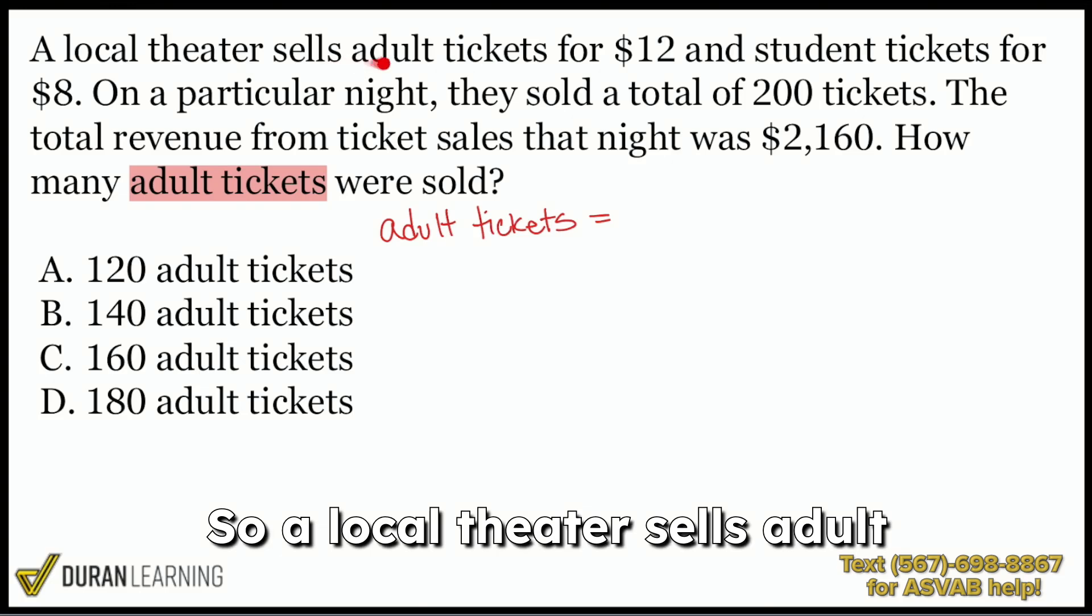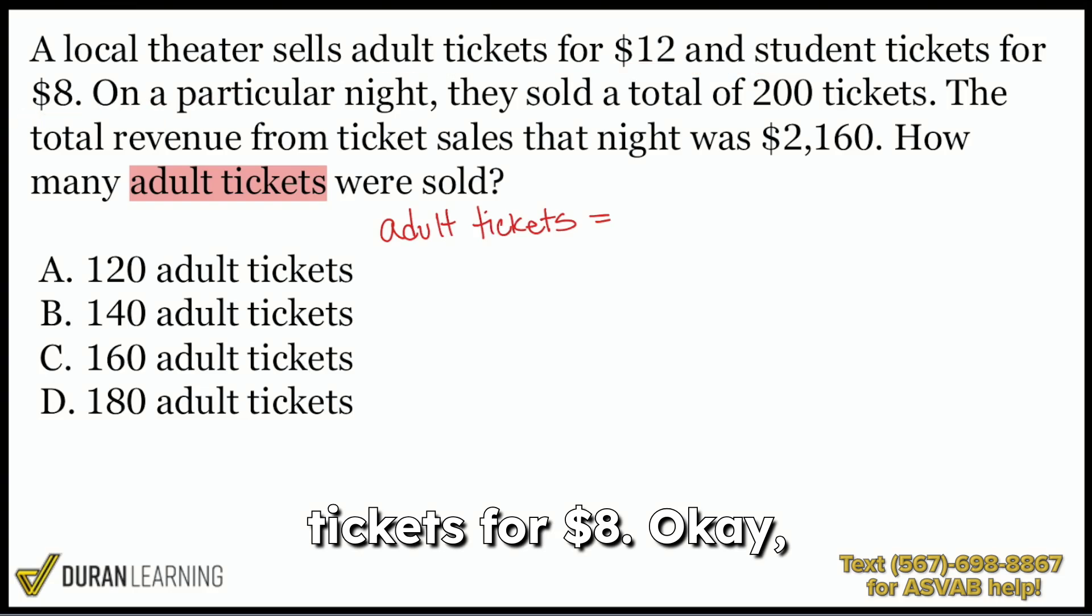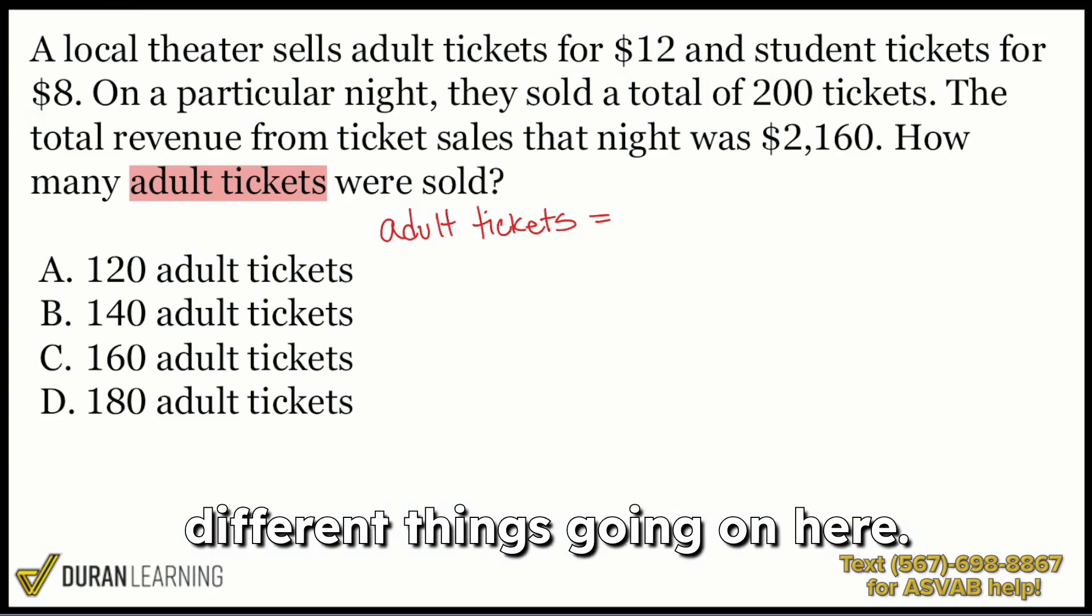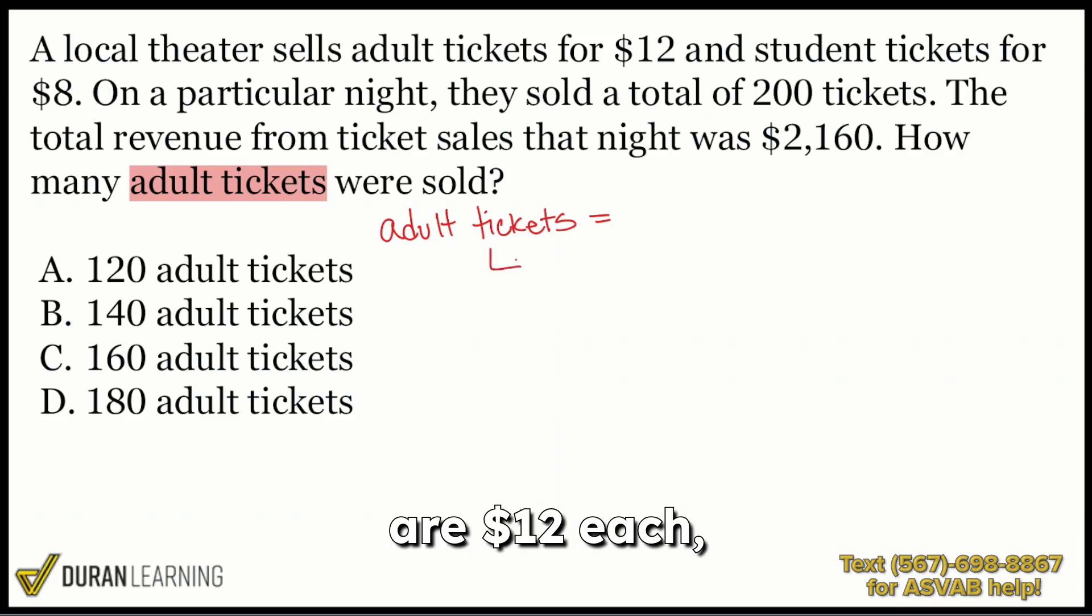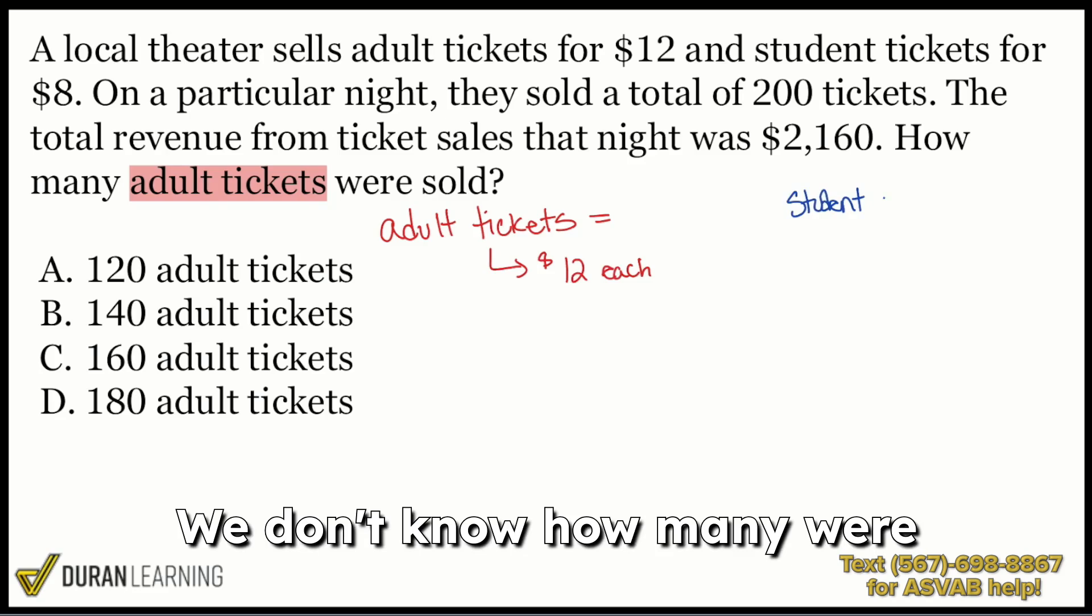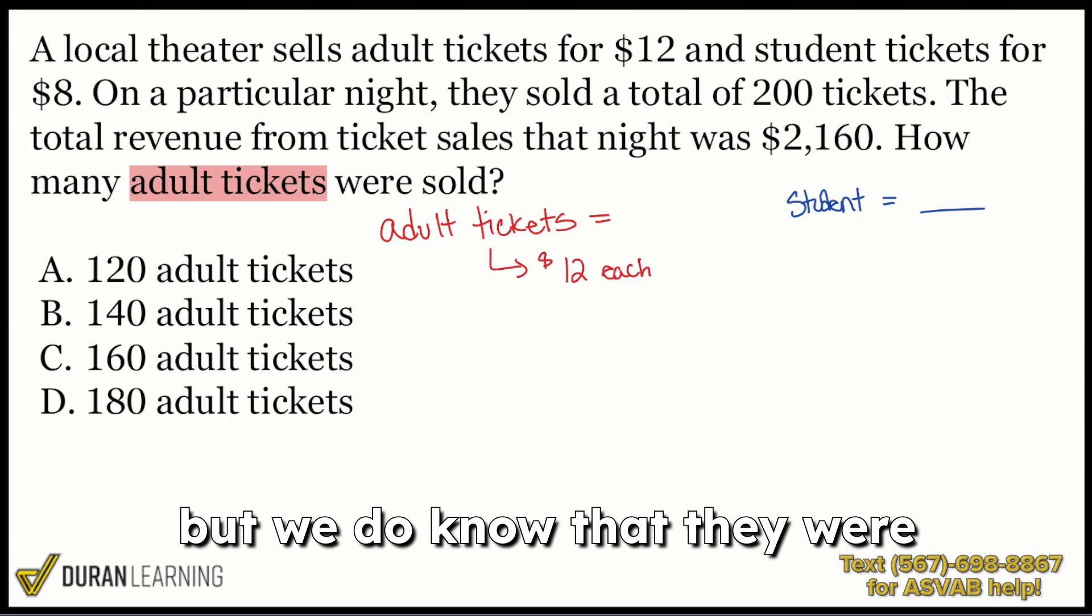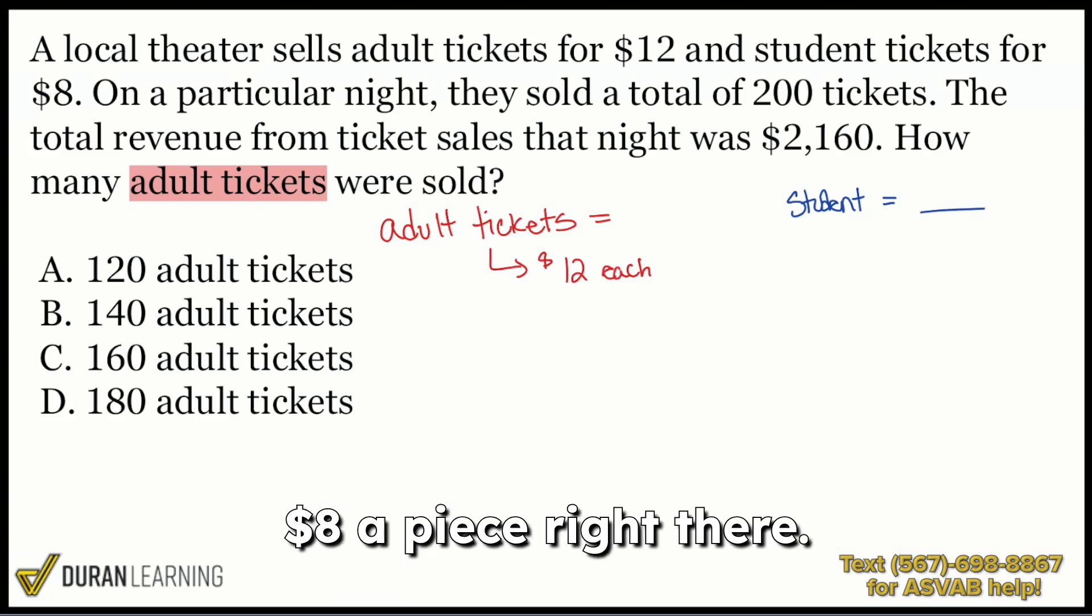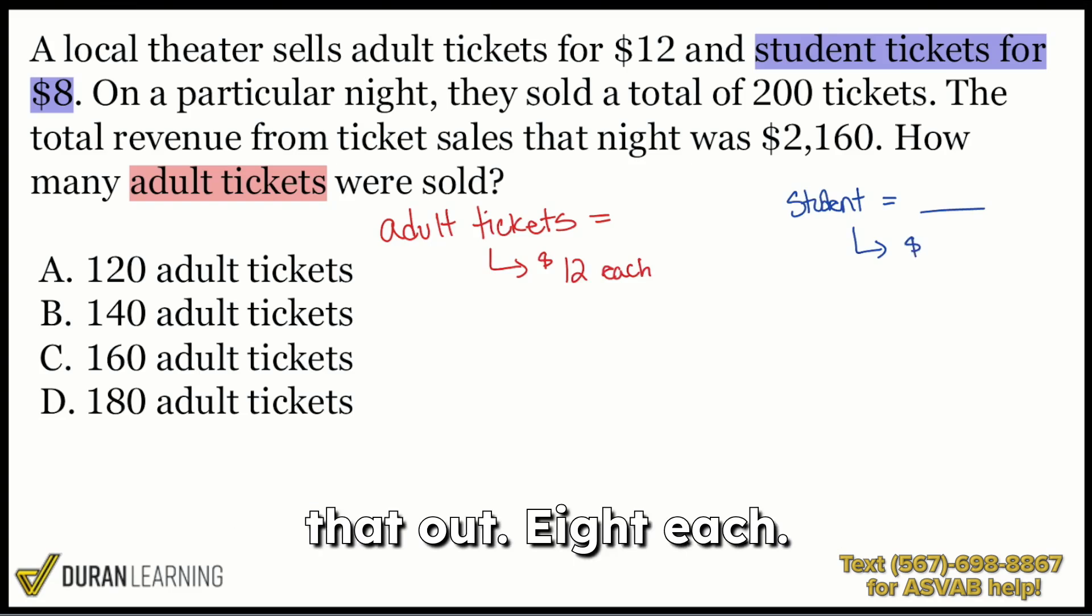So a local theater sells adult tickets for $12 and student tickets for $8. Okay, so it looks like we have two different things going on here. We do have those adult tickets, and we know that they are $12 each. But we also have student tickets. We don't know how many were sold there either, but we do know that they were $8 a piece. Student tickets for $8. So I'll go ahead and write that out. Eight each.